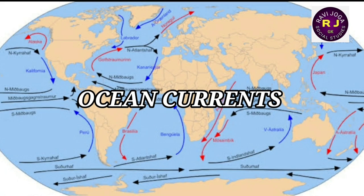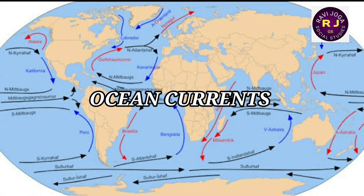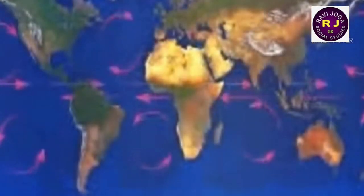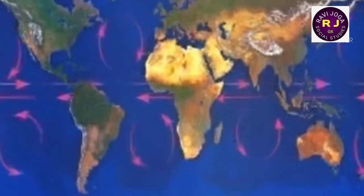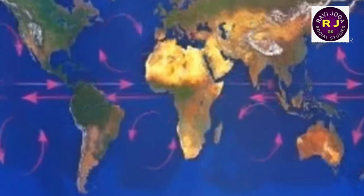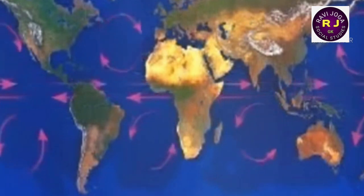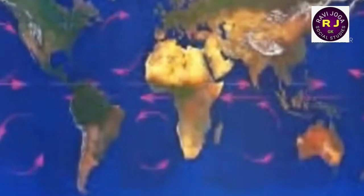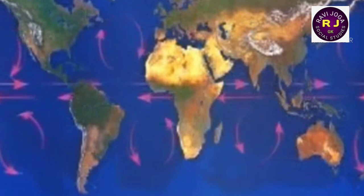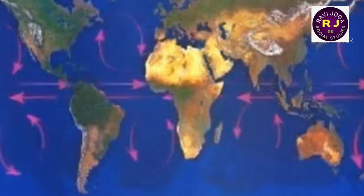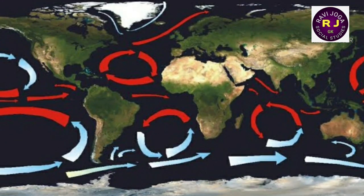Like river water, ocean water moves from one place to another in a definite direction over a great distance throughout the year. This movement of water is called an ocean current — sometimes also called ocean rivers. Ocean currents are classified into two categories depending upon temperature: cold currents and warm currents.